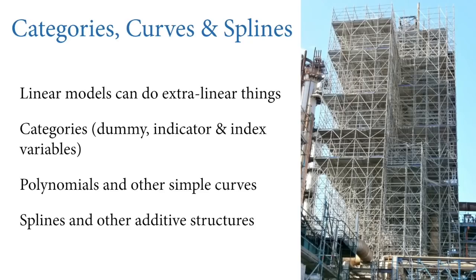Categories are often modeled with devices called dummy variables or indicator variables. In this lecture I'm going to focus on another way called index variables — they're all equivalent, but I'll explain why I prefer index variables. After the intermission, we're going to turn to making curves. There are two ways I want to introduce: polynomials, which are common but have a huge number of drawbacks and probably should only be used in rare cases, and splines, which are much more flexible and can be extended to generalized additive models, which are very powerful.